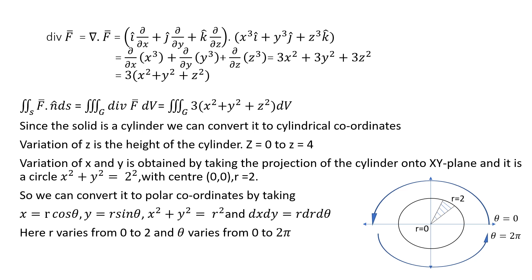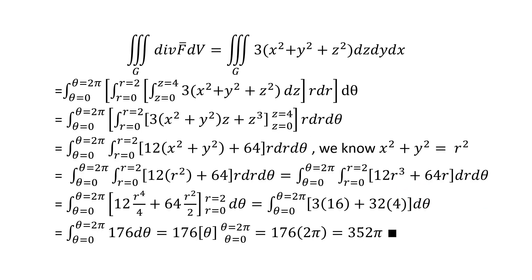In polar coordinates, the circle of radius 2 gives r varying from 0 to 2, and since it is a full circle, theta varies from 0 to 2π. We now have all limits for z, r, and theta, and can evaluate the triple integral over G of divergence of F dV. The integral becomes the triple integral of 3(x² + y² + z²) dz dy dx, with z from 0 to 4.